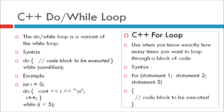For example: int i = 0; do { cout << i; i++; } while (i < 5). After the curly bracket is complete, we have to put the while condition. Do not forget to increase the variable used in the condition, otherwise the loop will never end — similar to the while loop.